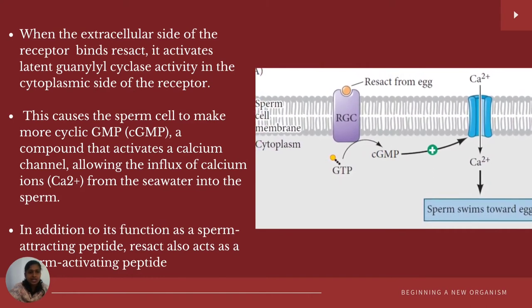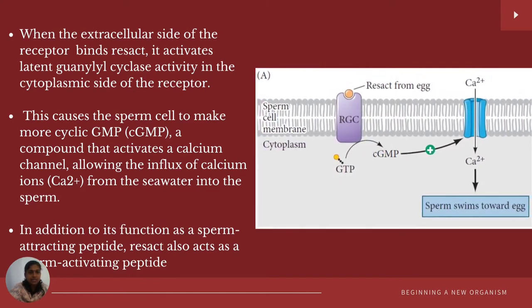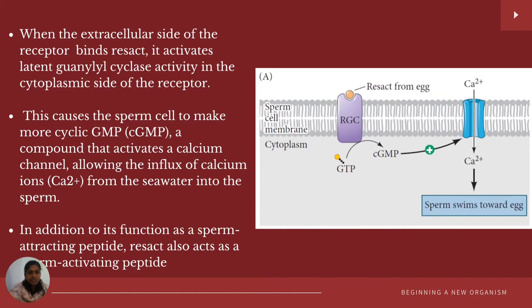When the extracellular side of the receptor binds with resact, it activates guanylyl cyclase activity on the cytoplasmic side of the receptor. This causes the sperm cell membrane to produce more cyclic GMP, a compound that activates calcium channels allowing the influx of calcium from sea water into the sperm cell. In addition to acting as a sperm-attracting peptide, resact also acts as a sperm-activating peptide, after which the sperm can swim towards the egg.